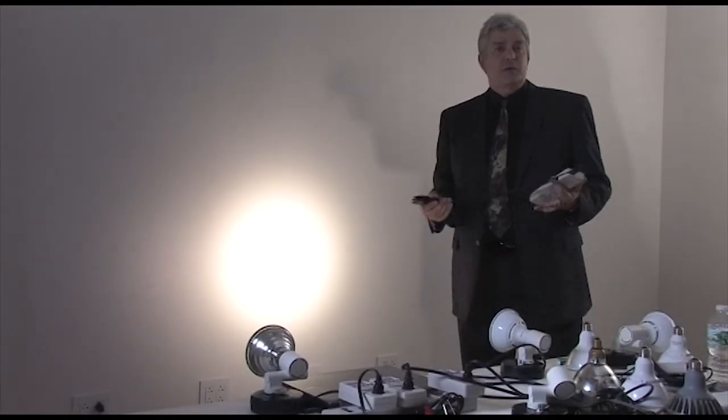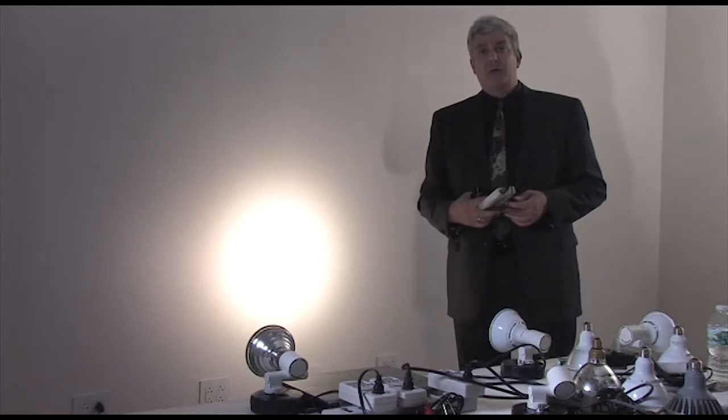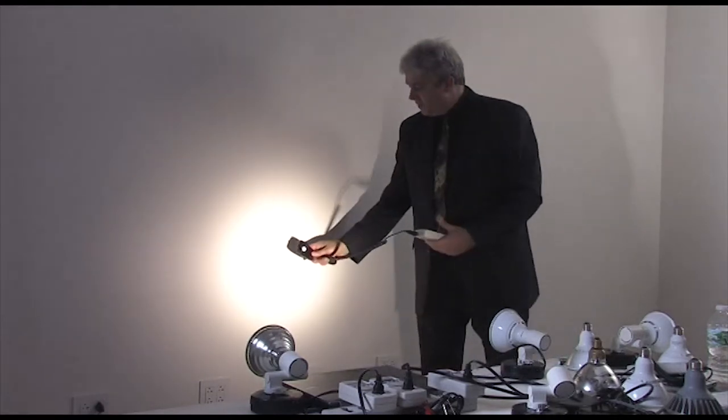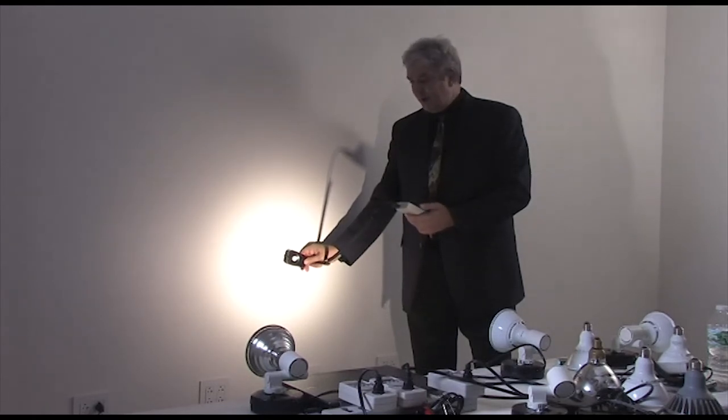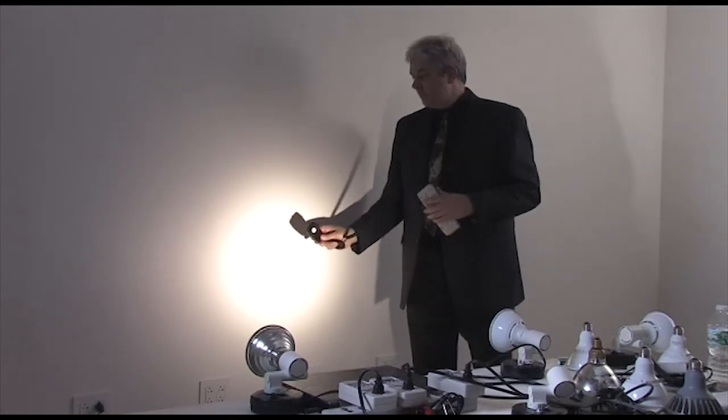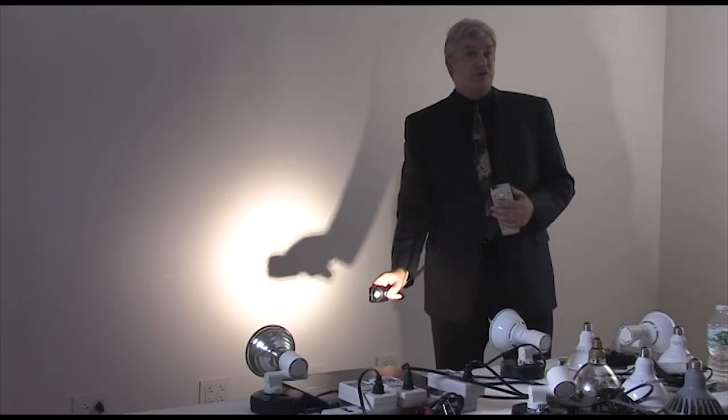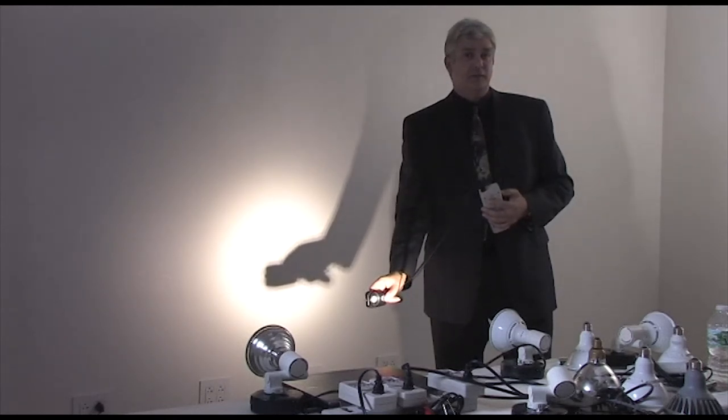Now we're going to show how the inverse square law works. We've got an LED par lamp with a center beam candle power of 4800 candle power, or candela. We're going to be four feet away from the lamp. We measure, and we get practically 300 foot candles, which is perfect. Now, when I take my light meter and I move it from four feet to two feet, I'm halving the distance. So it should be twice as strong. However, I now have 1,200 foot candles, four times. This is the inverse square law.